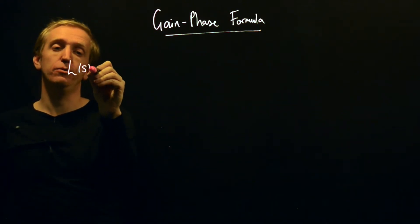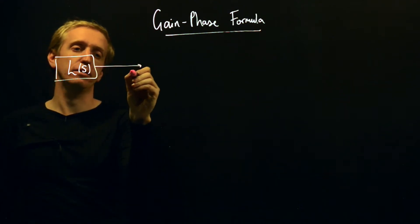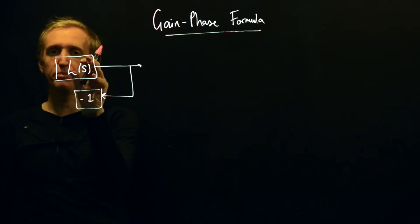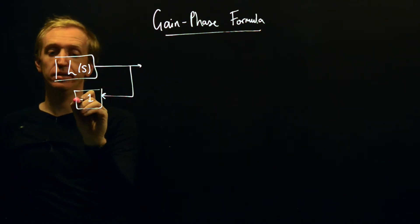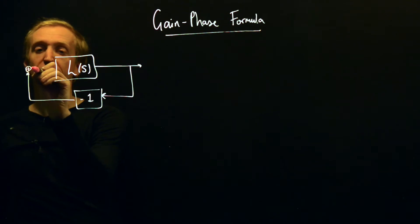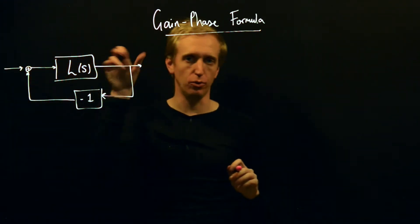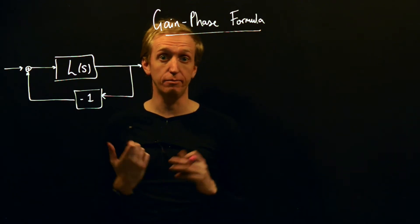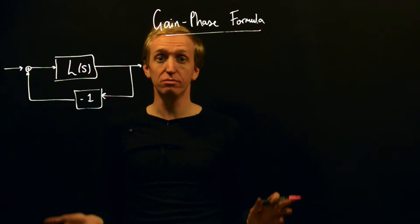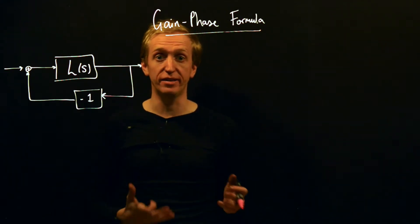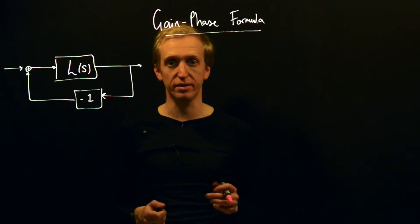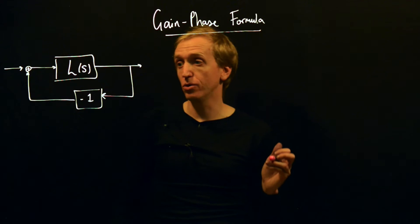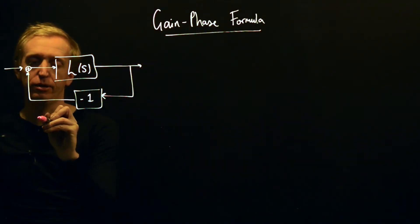Everything we're going to talk about now concerns the standard feedback setup, where we have some process and controller all lumped together into our return ratio L(s), and this is in negative feedback. We're interested in understanding what is possible to achieve with closed-loop design. Can we make things arbitrarily good if we're using control? Or are there some underlying trade-offs? The answer is yes, and one such trade-off is hinted at through this Bode gain-phase formula.